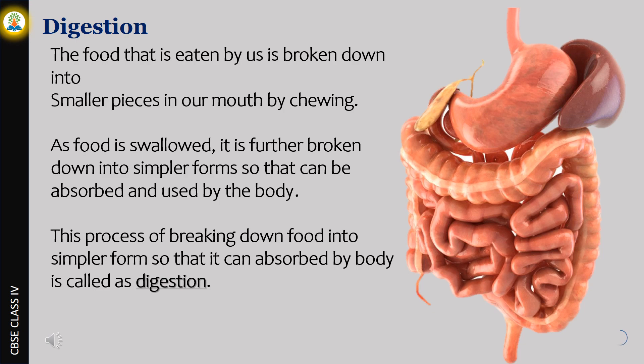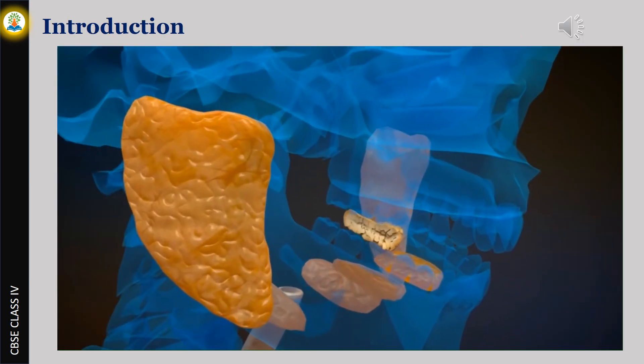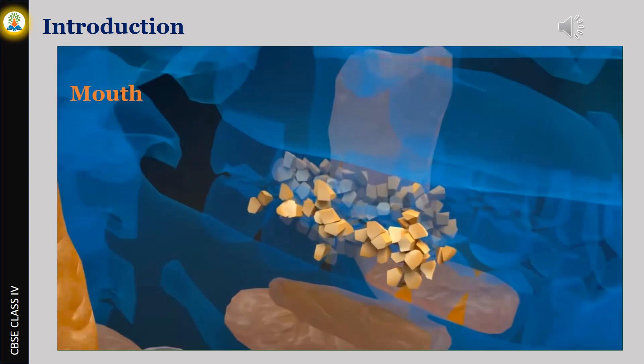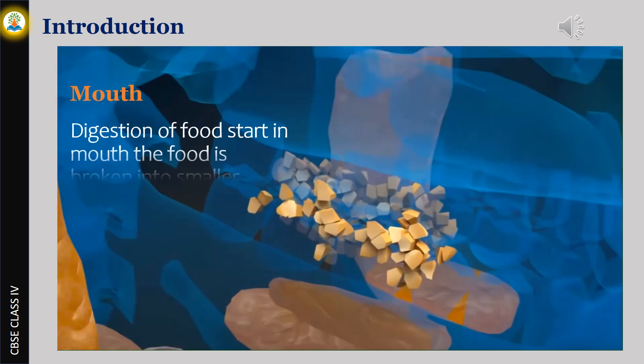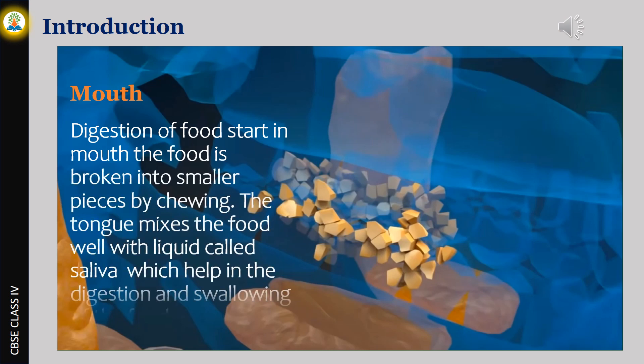Mouth: Digestion of food starts in the mouth. The food is broken into smaller pieces by chewing. The tongue mixes the food well with a liquid called saliva, which helps in the digestion and swallowing of the food.